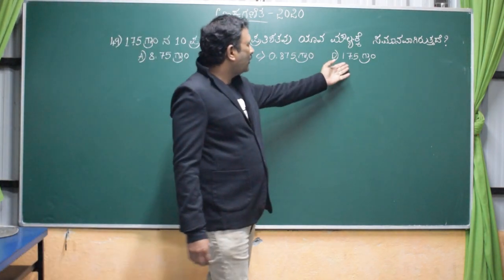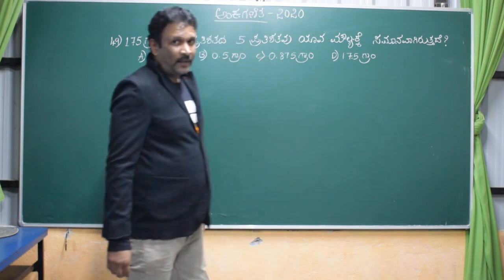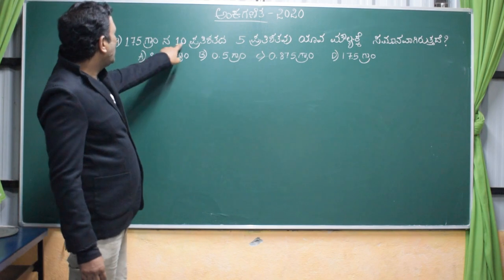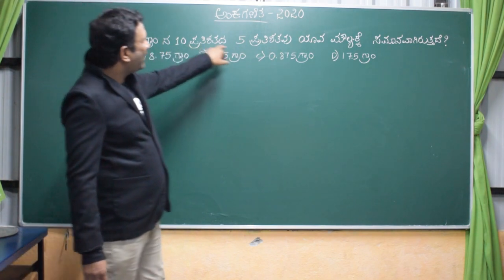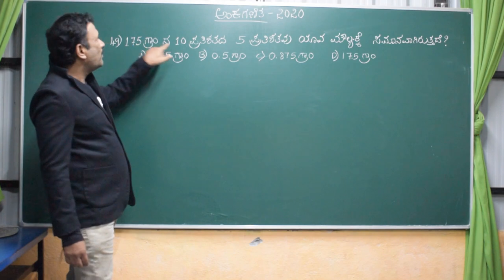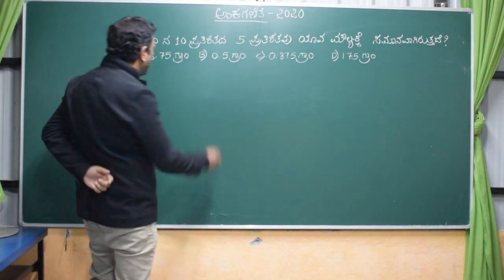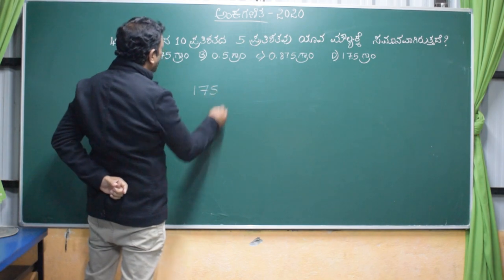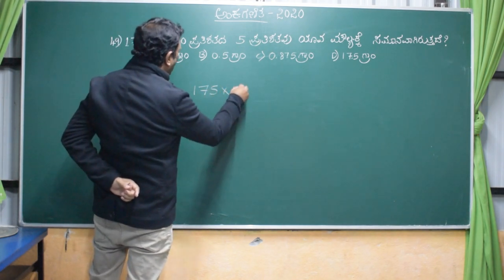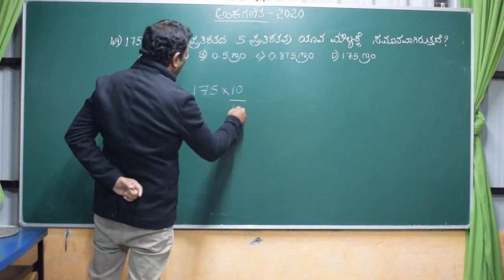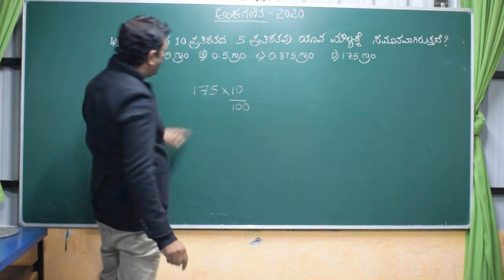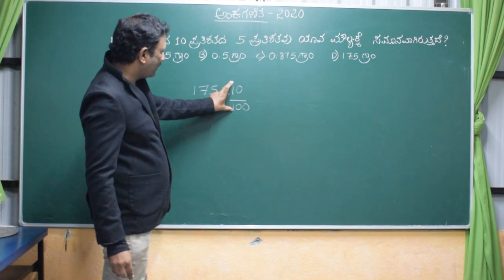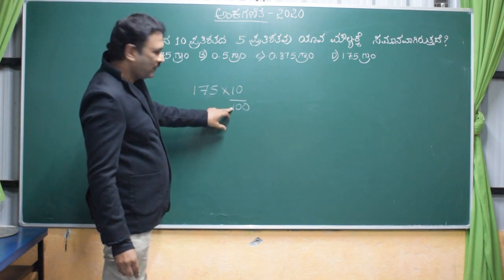It is about 1.75 grams. Take it carefully. 1.75 grams is equal to 17.5. Then we will calculate 1.75 grams. The percent of the percent, 10 percent is equal.